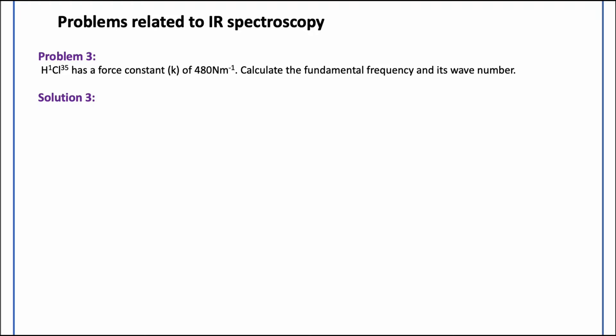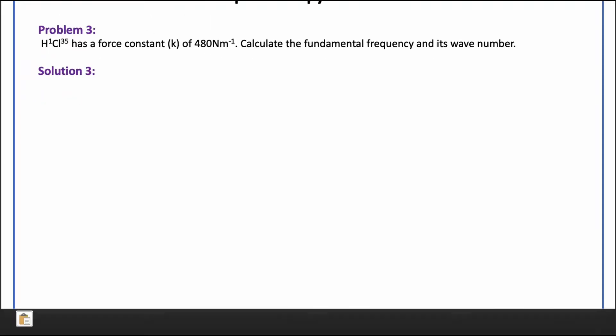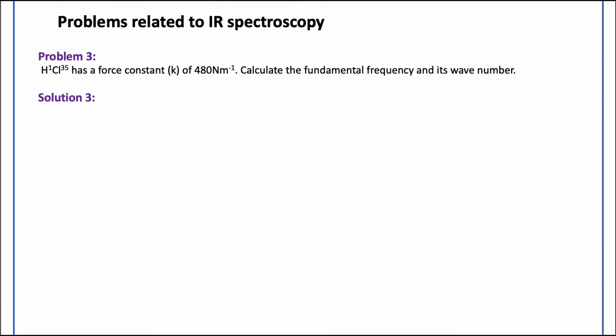Now, related to IR spectroscopy itself, the problem says that HCl has a force constant of 480 Newton per meter. So we have an HCl molecule for which the force constant is given to us. We have to calculate the fundamental frequency and its wave number.